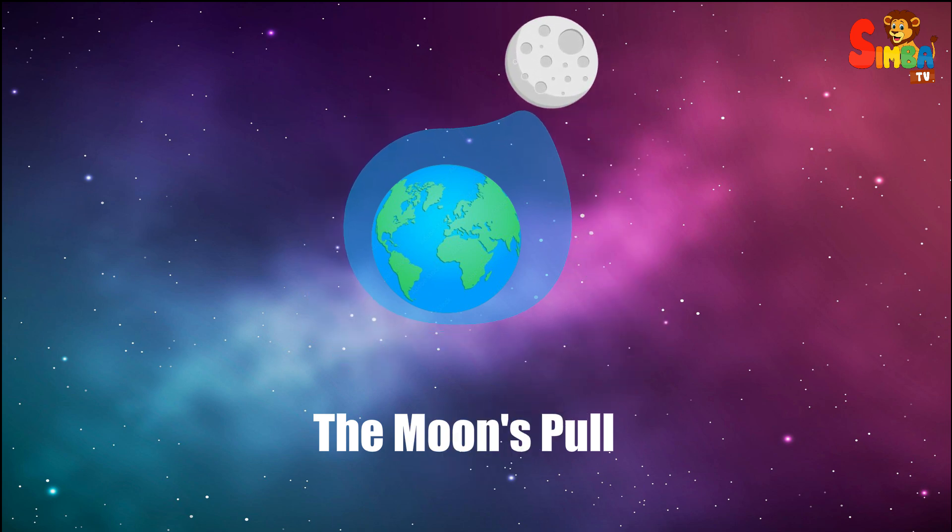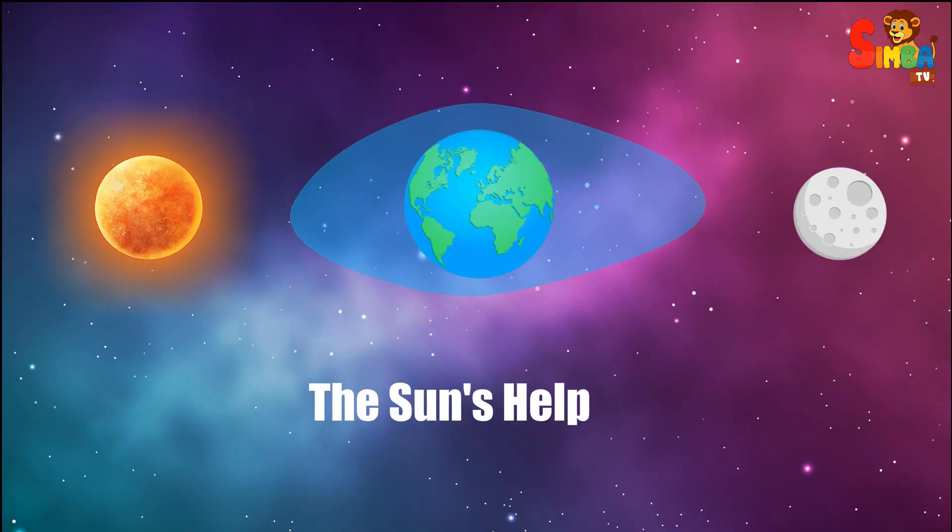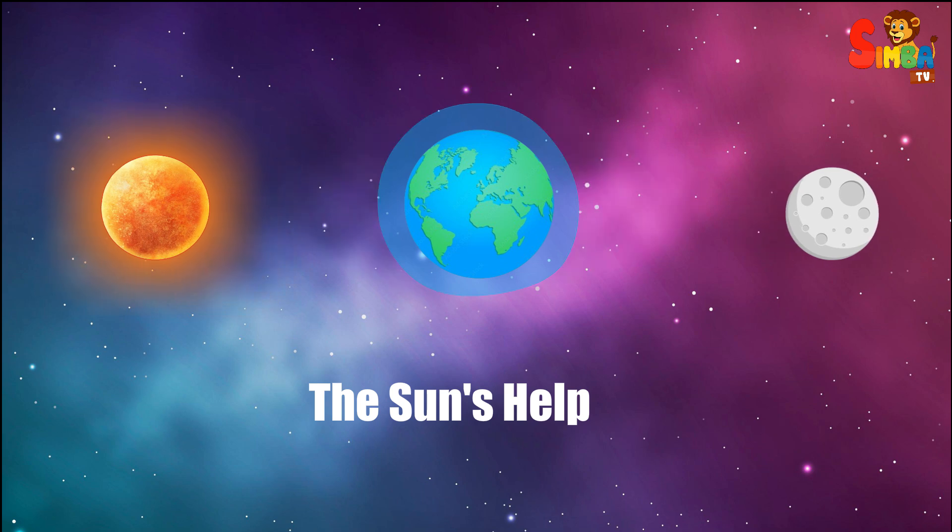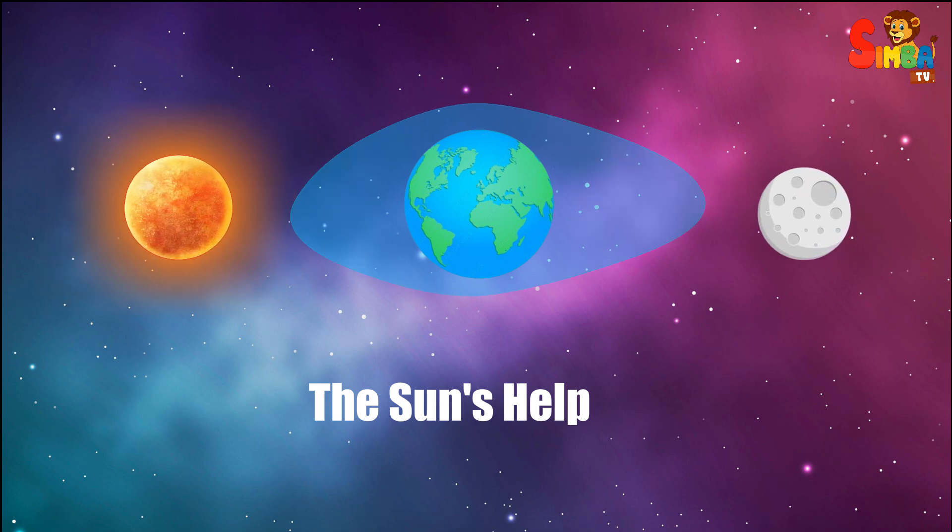The sun's help. The sun also pulls on the ocean, just like the moon. When the moon and the sun pull together, the tides get even higher. These super high tides are called spring tides.